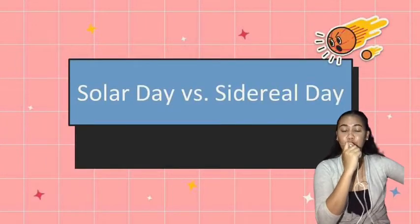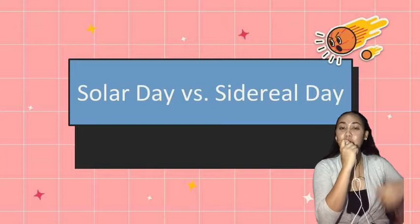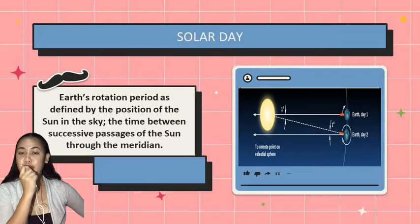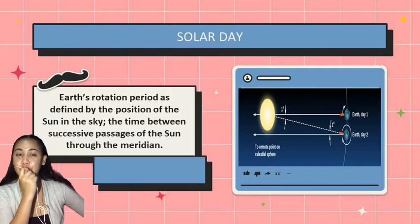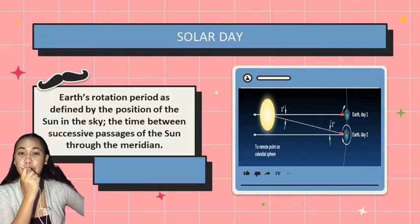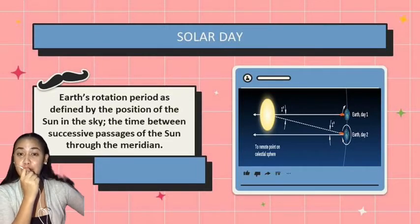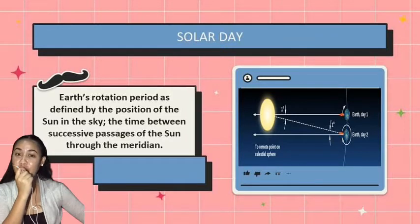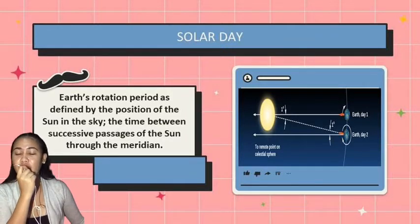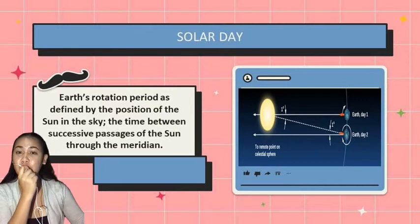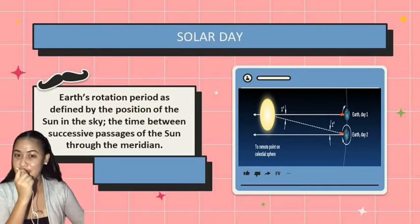In this video, we will differentiate the solar day versus the sidereal day. We define the solar day as Earth's rotation period as defined by the position of the Sun in the sky — the time between successive passages of the Sun through the meridian. In other words, the solar day is Earth's rotation with respect to the Sun.